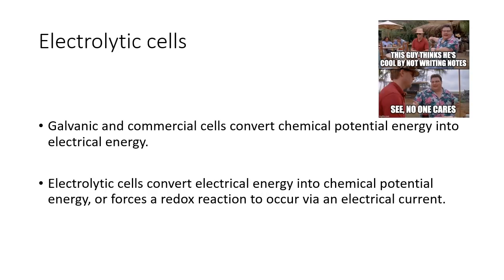Galvanic cells and commercial cells convert chemical potential energy into electrical energy — that's turning chemical energy into electrical energy to make it useful in terms of batteries and such. Electrolytic cells take electrical energy and convert it into chemical potential energy, which means they're effectively doing the opposite: using electricity to make more reactive, more unstable chemicals. It forces the redox reaction to occur via an electric current.